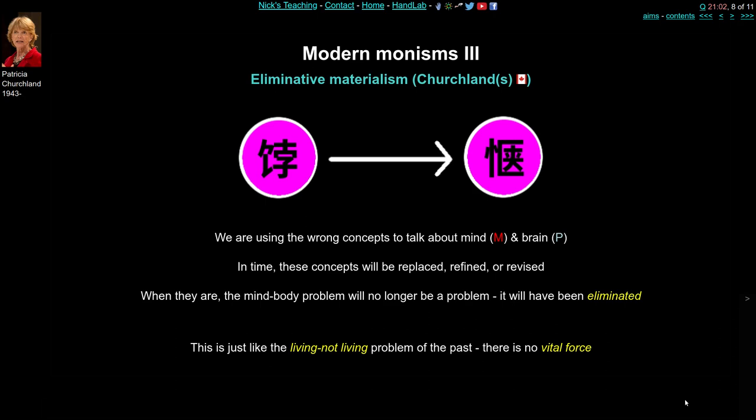When we get to that future point, we'll look back and think: why were we ever worrying about the mind-brain problem? At that point, the mind-brain problem will have just been eliminated. Although this requires faith that science will get there, the prospect is quite attractive because it just deals with the mind-body problem. An analogy is an old philosophical problem: what is life? What is alive and what is not alive was a real philosophical and scientific problem in the past, concerning the vital force or élan vital. And somehow we've just moved on and eliminated that problem.